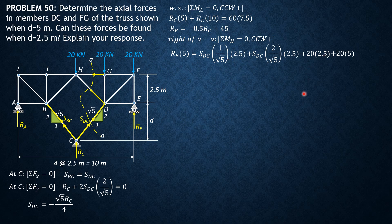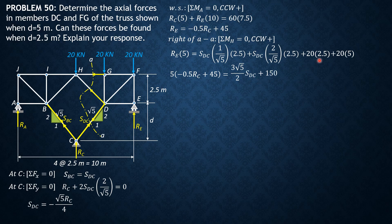Simplifying and substituting R_E equals (negative 0.5 R_C plus 45): 5 times R_E gives negative 2.5 R_C plus 225. Combining the S_DC terms gives 3 times square root of 5 over 2 times S_DC. The right-side load moments sum to 150.